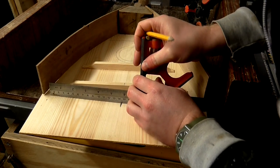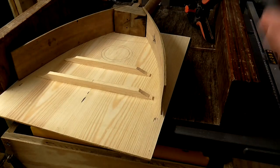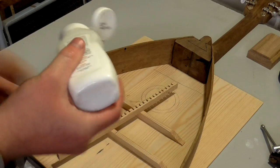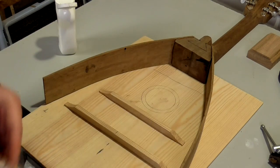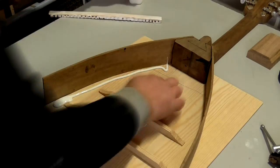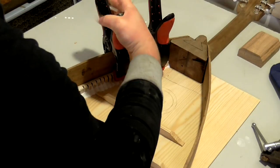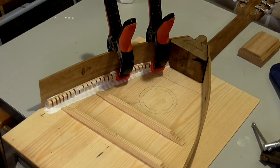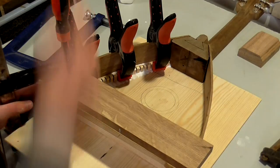I then marked up from the centre line of the soundboard where I wanted the sides to be positioned so that they were equal. Then I added glue, added the kerfing, lined it up with the mark I'd made, and clamped it all down.